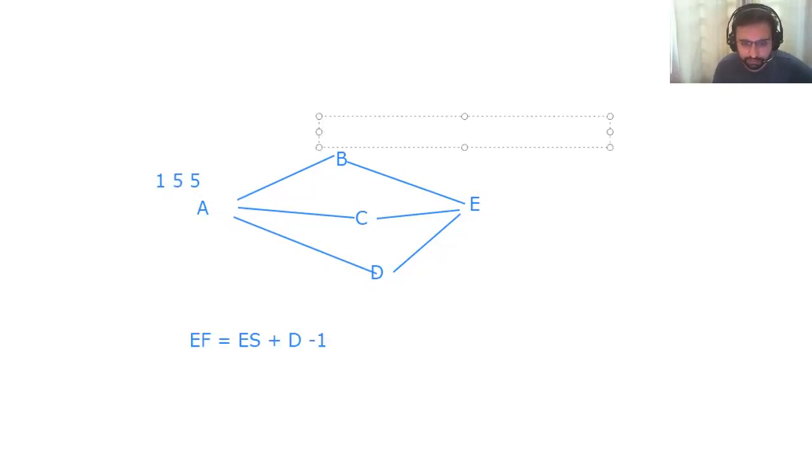So utilizing this formula, the duration of B was eight. Duration of B was eight, but we have six, eight. Using this formula, six plus eight, 14 minus one, 13.